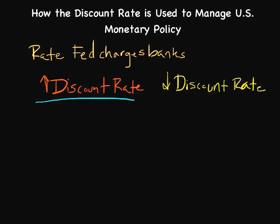You can apply the same logic to the way that banks look at it. If banks could originally get loans for somewhere in the neighborhood of 1%, and all of a sudden the Federal Reserve adjusts the discount rate to 3%, now banks are saying it's more expensive to get access to these funds — maybe we won't go ahead and do this right now.